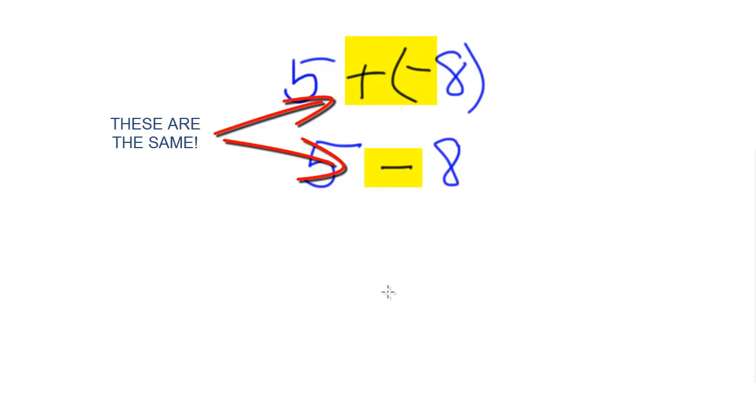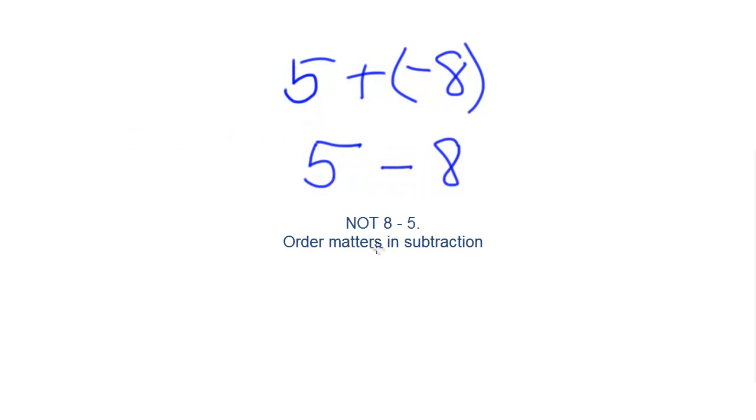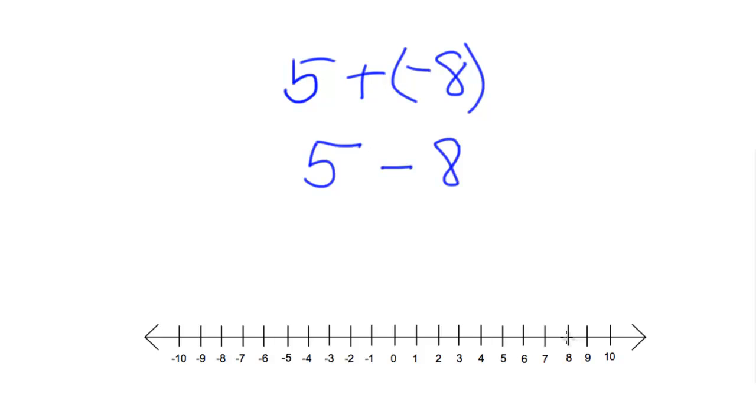Well, at this point, you might be tempted to say that the answer is 3, because we have an 8, we have a 5, we subtract them. The problem is, with subtraction, order matters. Let's do this one again on the number line.